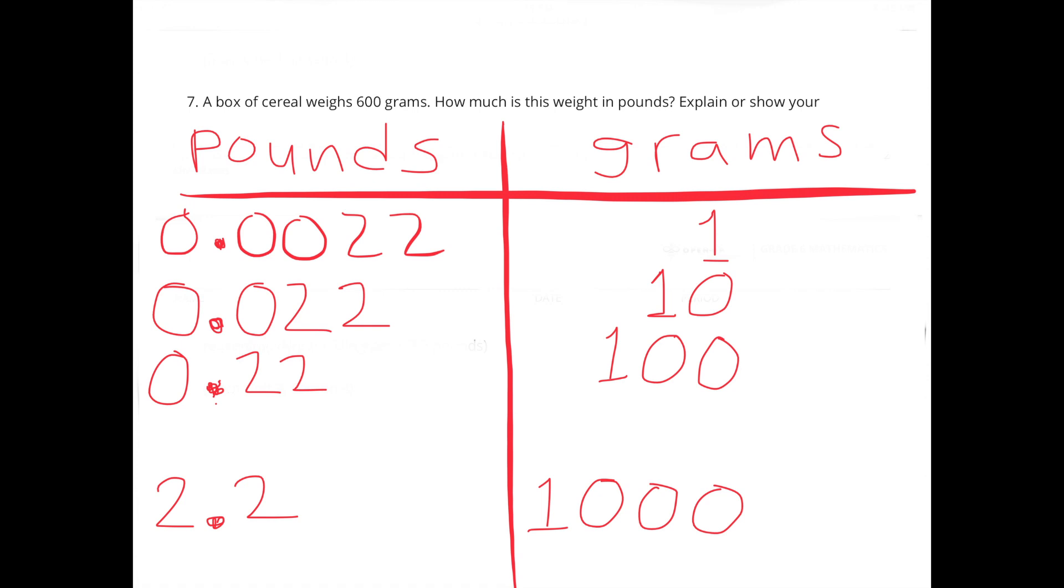1000 grams equaled 2.2 pounds. What I'm trying to do is get to 600 grams, and now I can get to 600 grams by adding 500 grams to the 100 grams that we already have. 1000 divided by 2 gives me 500.